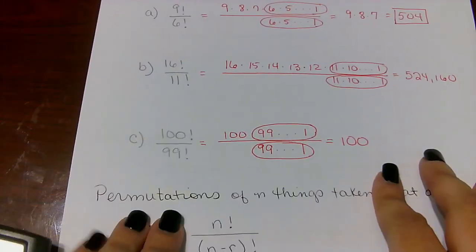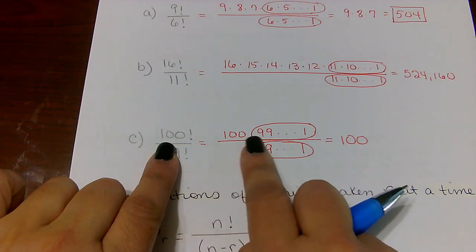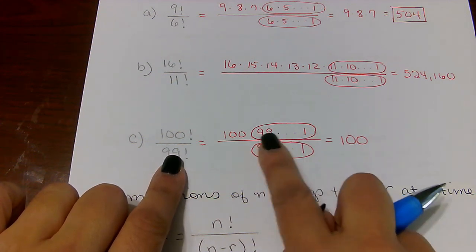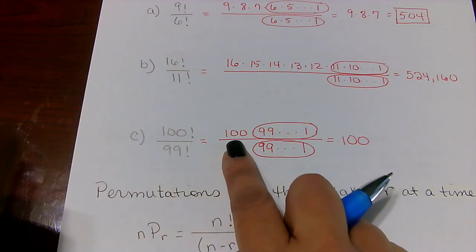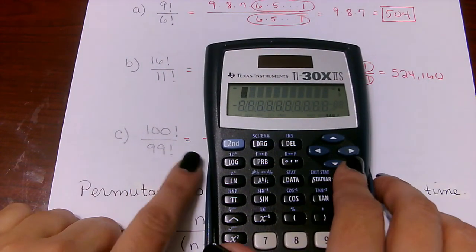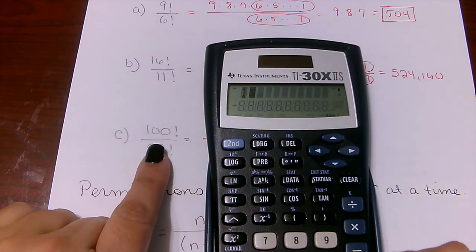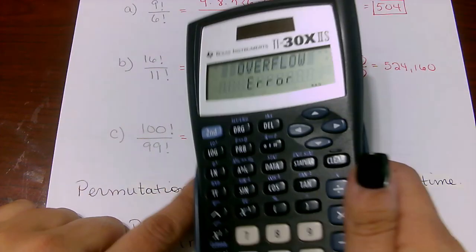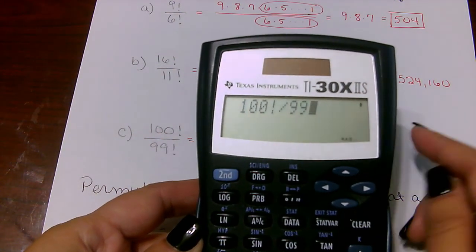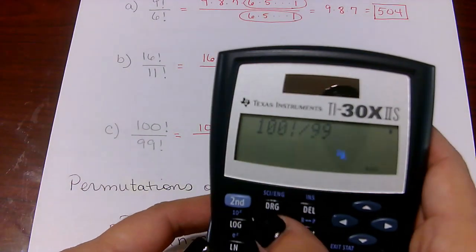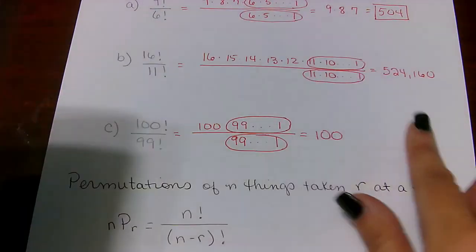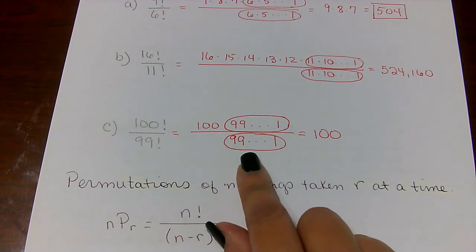For part C, evaluating 100!/99!: everything from 99 down cancels, leaving just 100. However, if you try this in the calculator, it will give an overflow error because the numbers are too large. So knowing how to work these by hand is useful in certain situations like this.